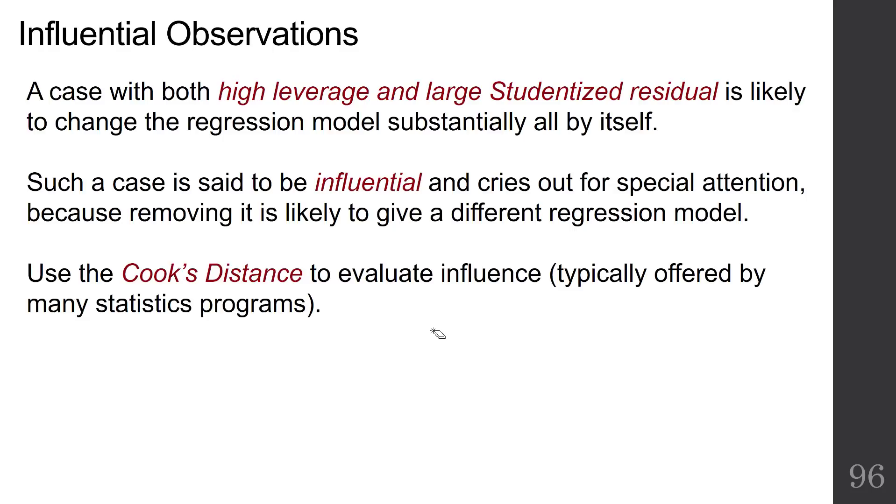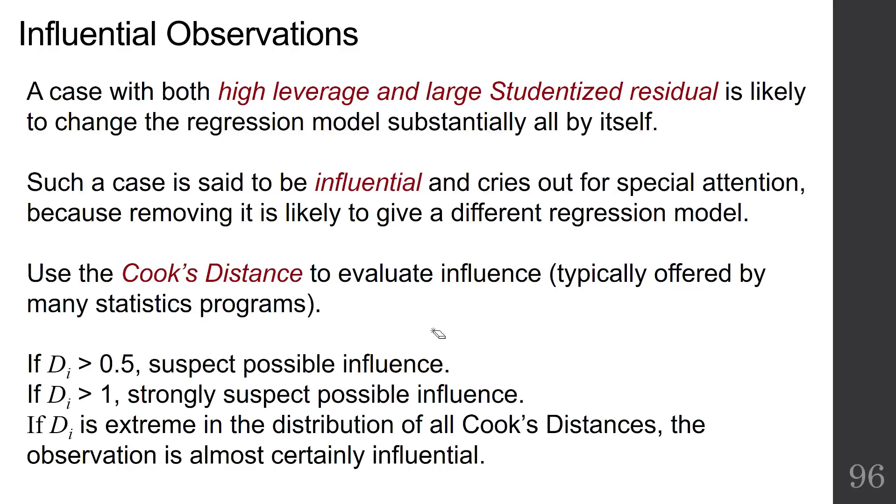We're going to talk about one particular measure called the Cook's Distance or Cook's D to evaluate influence. This one's widely offered in statistics programs. There are others, but this is just one and it'll get us starting a conversation about influential observations. We're going to give some loose cut-offs that if D is greater than 0.5, we're going to suspect possible influence. If it's greater than 1, we're going to strongly suspect possible influence. And we're also going to look at the distribution of all the Cook's D's for our regression. If our particular D is extreme in the distribution of all Cook's Distances, then the observation is almost certainly influential.